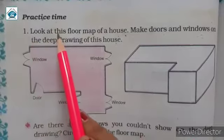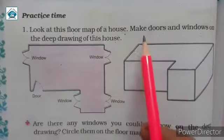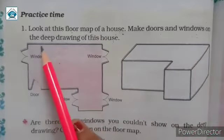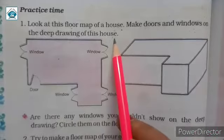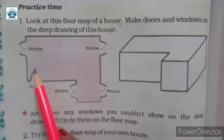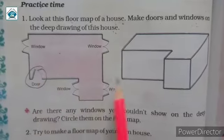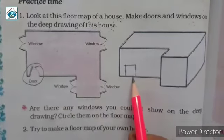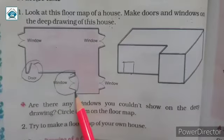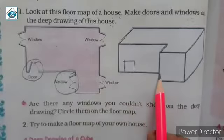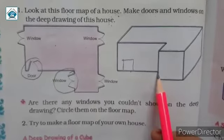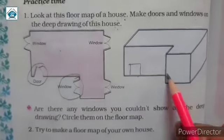First look at this floor map of a house. Make doors and windows on the deep drawing of this house. So first we have to make a door. Here we can make a door. Then window. So this window it may be here. We cannot make this window. So leave it.